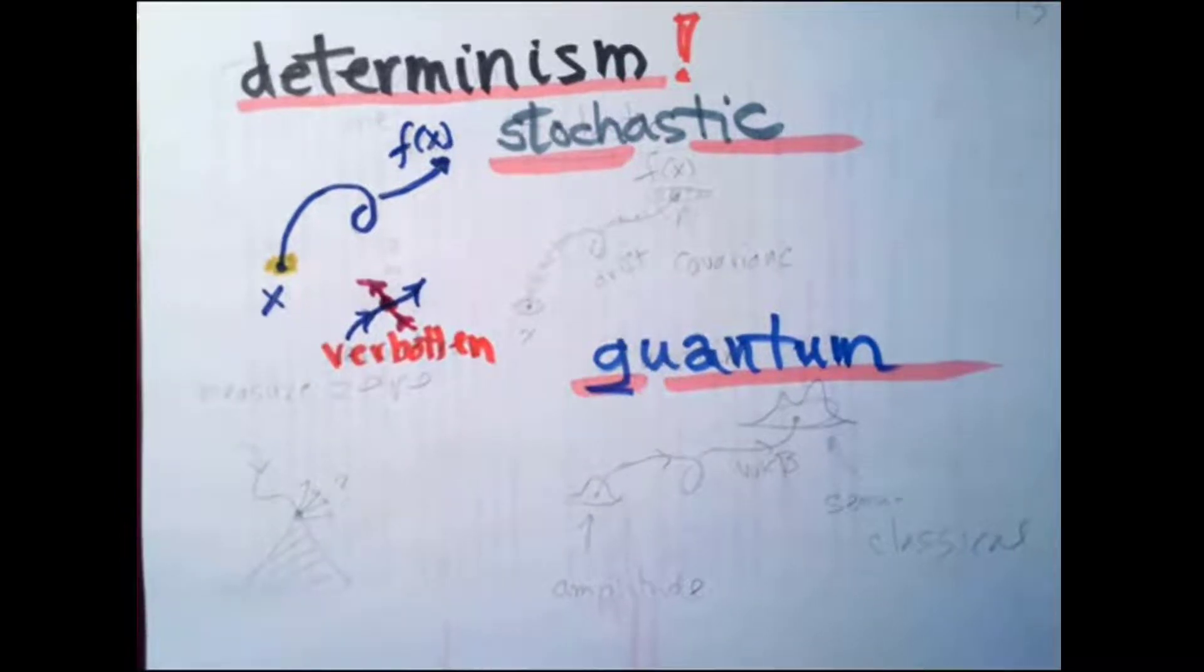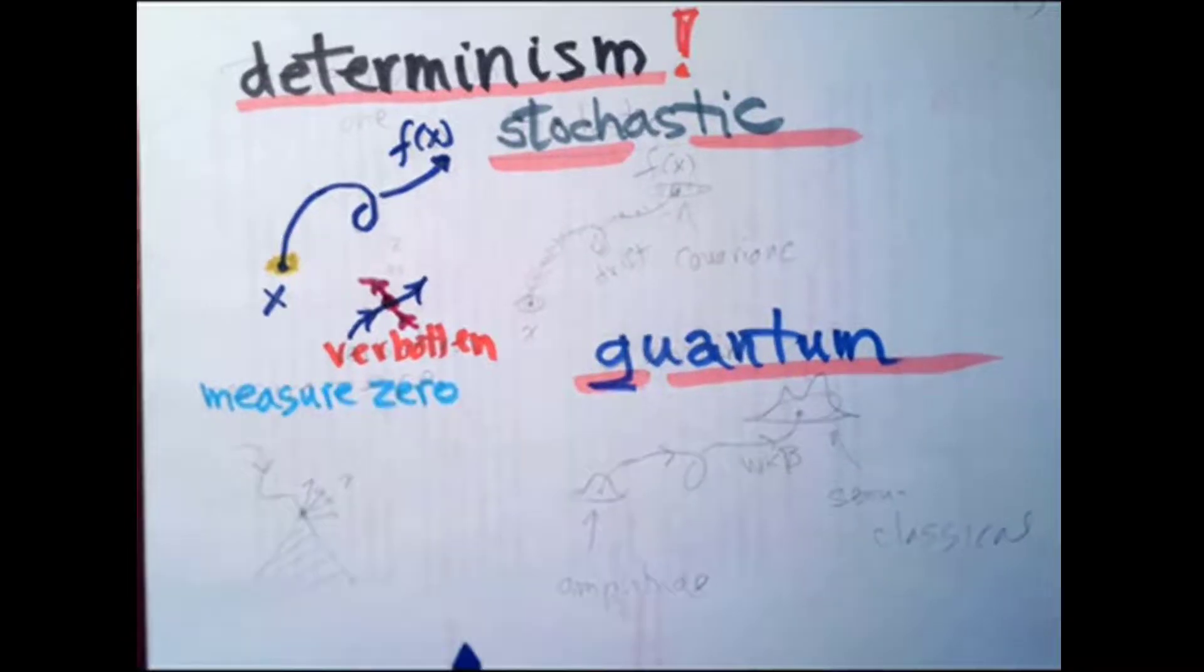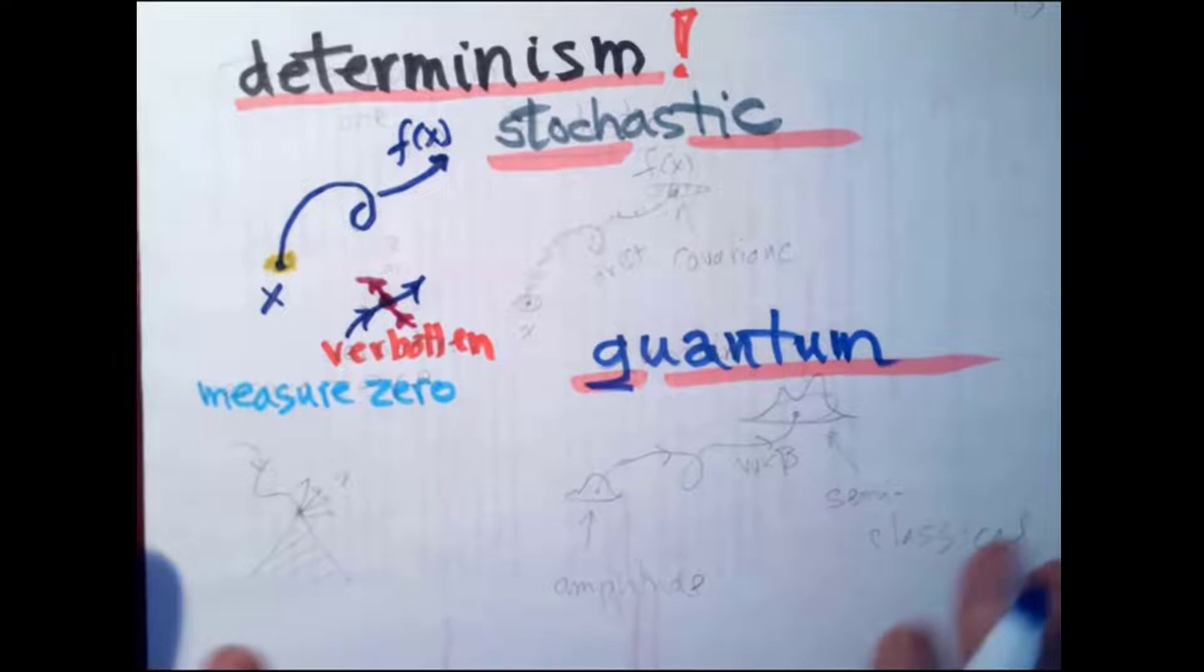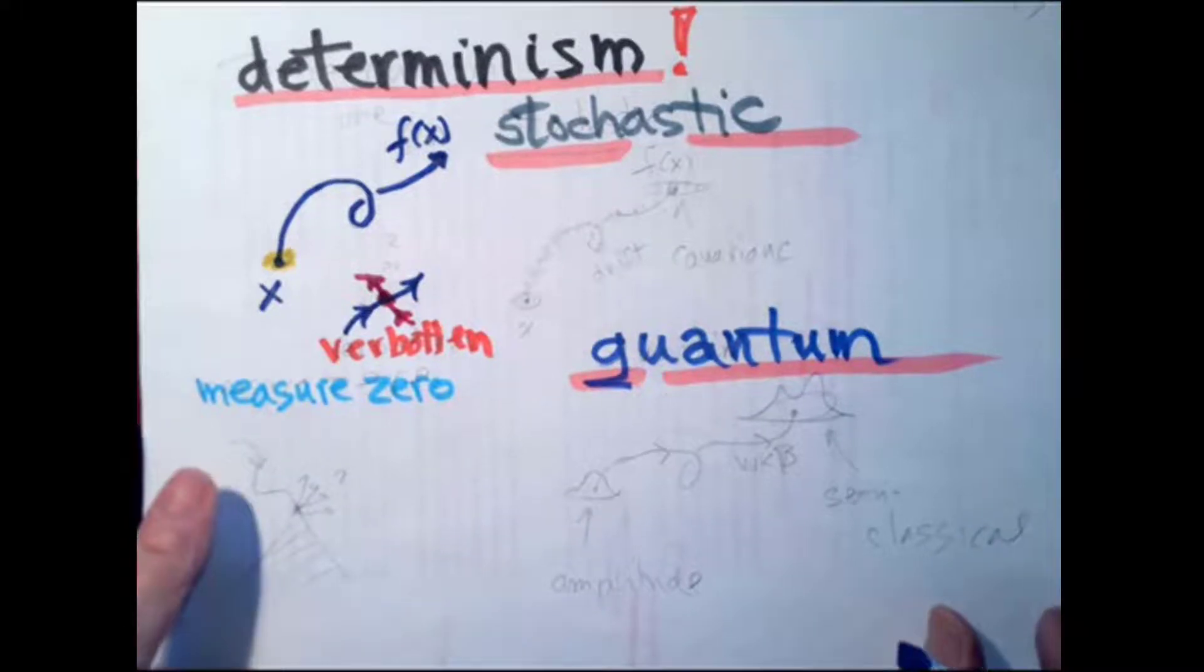So determinism assumes that almost every place except for set of measure zero, measure zero means whenever somebody says measure zero, you say, aha, on my ruler, the fractions of millimeters of inches, they're rational numbers.